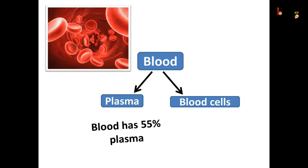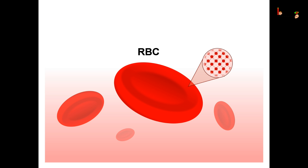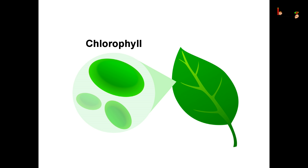The rest 45% is blood cells. Most of the plasma fluid is just water — more than 90% of plasma is water. If plasma is straw-colored, then how is the blood red? It is because of one type of blood cells — the red blood cells, or RBC in short. The RBCs are like flat disc-like shapes with a little depression in the center.